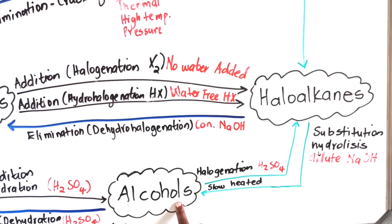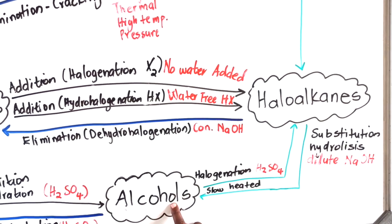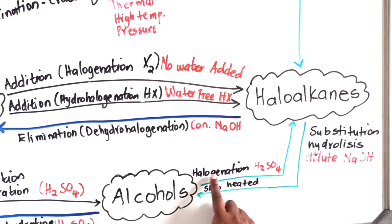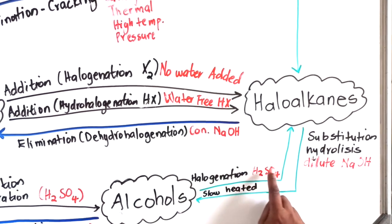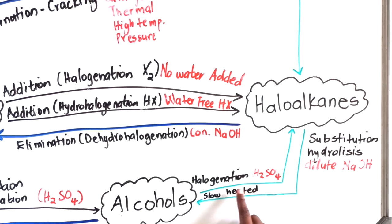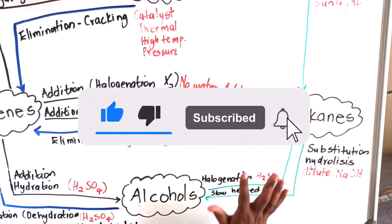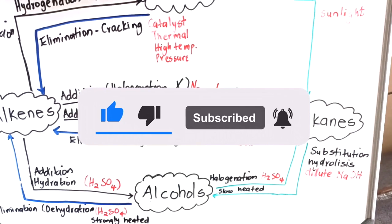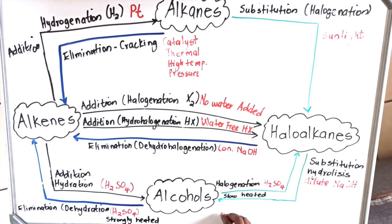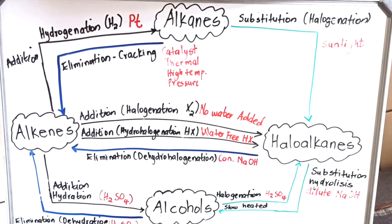When alcohols undergo substitution they form haloalkanes. The alcohol reacts with a hydrogen halide and forms a haloalkane — this process is called halogenation and it is a substitution reaction. The catalyst needed is sulfuric acid, and the alcohol must be slowly heated. Memorize all these reactions and write them out on your own, because exam questions often present them as flow diagrams, so if you can place them in a flow diagram in your mind, you'll be able to get all the answers.